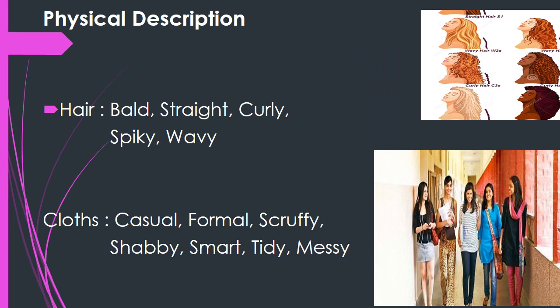The next point is hair. Some people have little hair or no hair on their head — we call that 'bald.' Some people's hair is straight, some is curly, some is spiky. 'Wavy' means not quite straight and not quite curly, but a little bit curving. You can see different hair types in this picture.